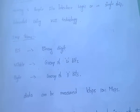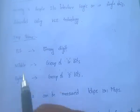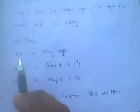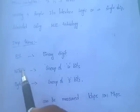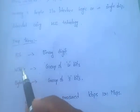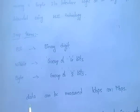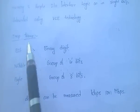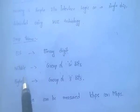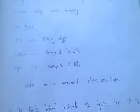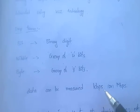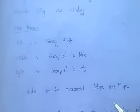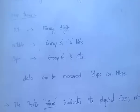Some important terms in microprocessor: Bit means it is a binary digit. Nibble is a group of 4 bits. Byte is nothing but a group of 8 bits. We can measure data in kilobits per second or megabits per second, that is kbps or mbps.